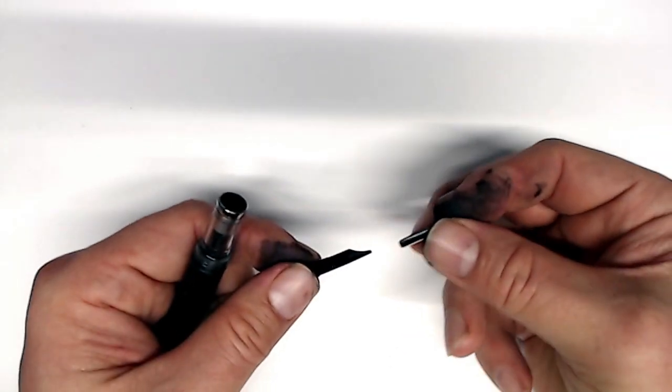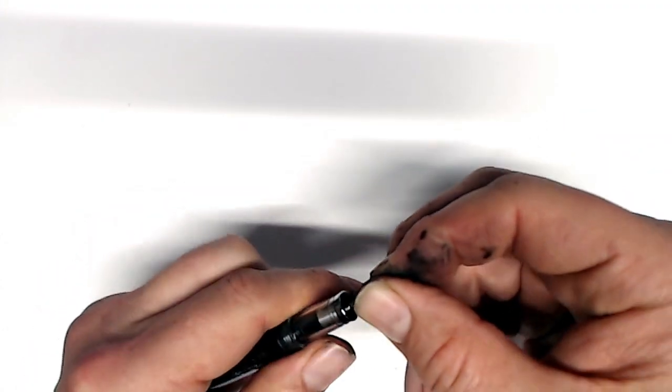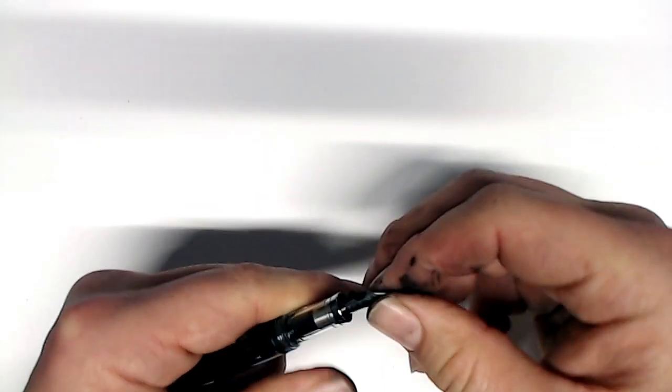And now I can take my Ultraflex nib, align it on the feed, and let's pop it right back in. Okay, make sure the alignment is straight. Let's give it a little shake, and let's give this a test.